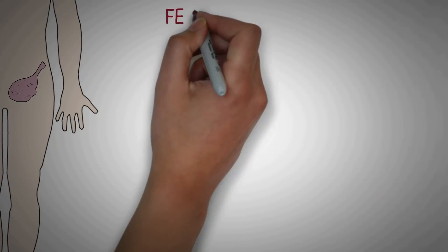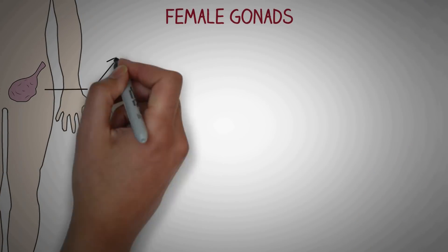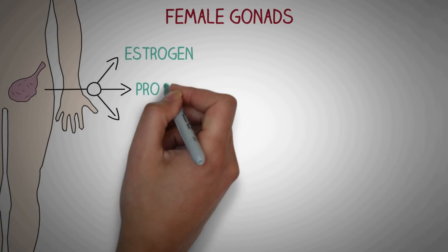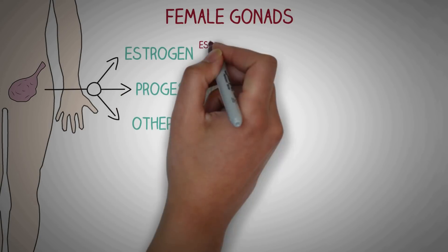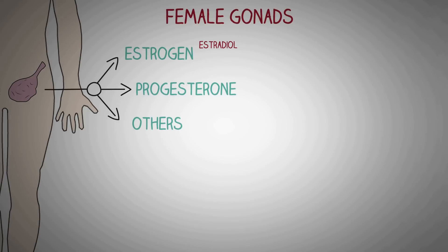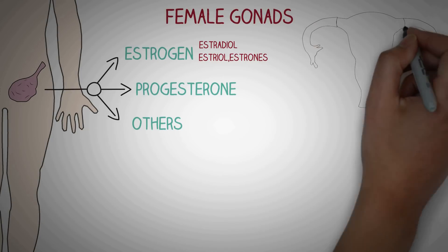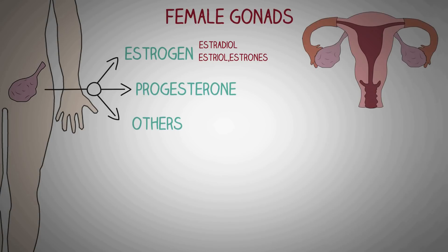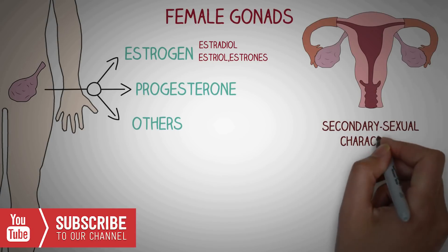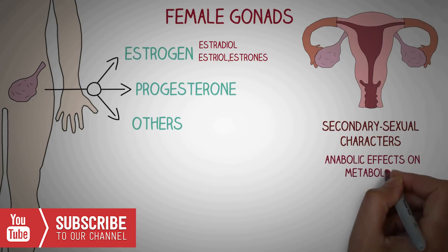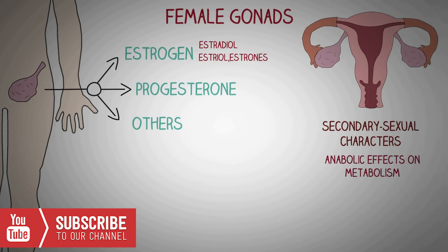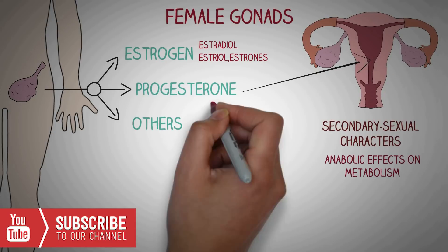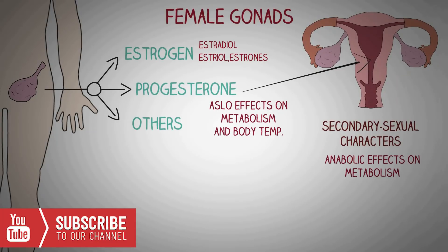The female gonads, the ovaries, secrete two important hormones: estrogens and progesterone. Estrogens are of various types; the most abundant in females is estradiol, along with estrone and estriol. Estrogen causes development of sex organs like the uterus, fallopian tubes, vagina, and cervix, as well as secondary sexual characters. Progesterone mainly acts on the uterus, cervix, and vagina, preparing these organs for conception of the zygote, and also affects metabolism and body temperature.